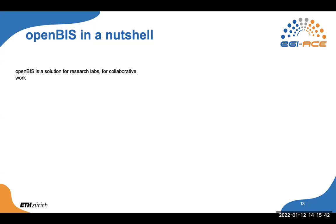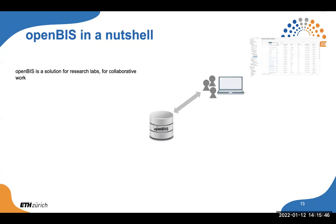OpenBIS is our proposed solution for research labs and for collaborative work. It is a client-server application, so the best value comes when used as a lab together — though you can download it on your own laptop and use it alone, this doesn't bring out the most value because it's really designed to help with collaborative work where many people can come in together and contribute all kinds of information. OpenBIS is hosted on a server and users access it through a user interface.